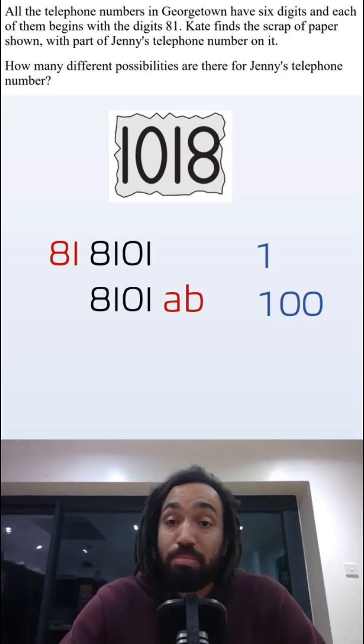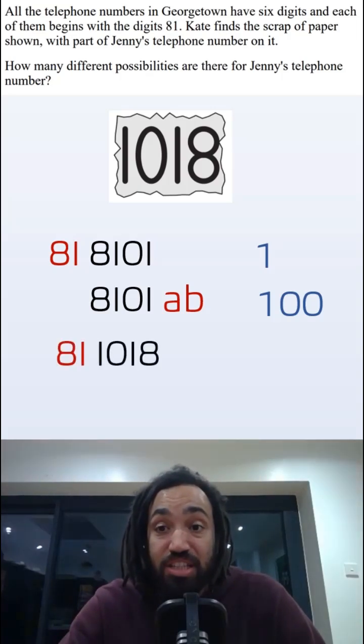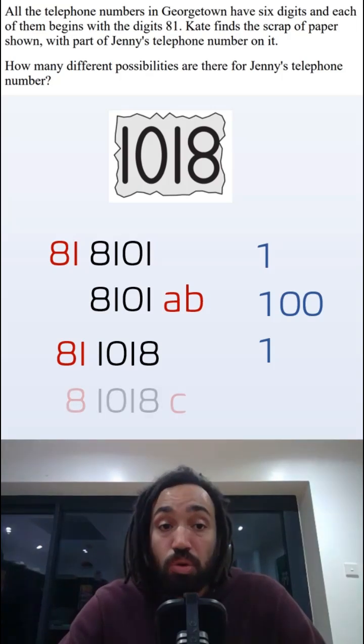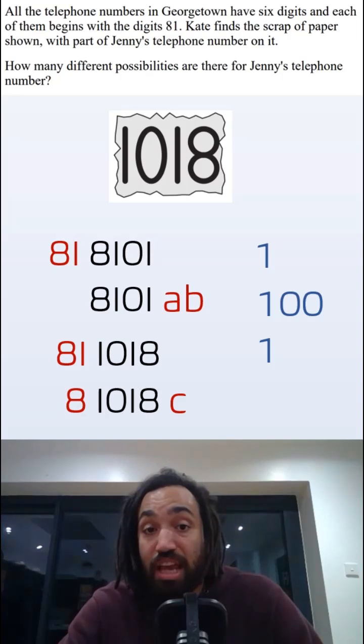We can next orientate the paper the other way round and we can add 81 to the start and that will give us another solution. And we could also try and find another 10 solutions by adding 8 to the start and C to the end.